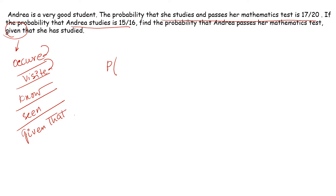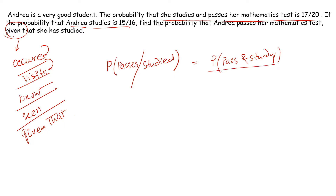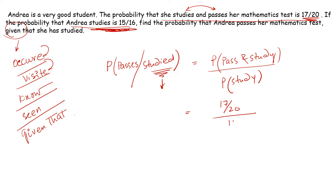We are asked to find the probability that Andrea passes her mathematics exam, given that she has studied. On the top write P(pass ∩ study) = 17/20, and in the denominator write P(study) = 15/16. The probability that she passes and studies is 17/20; the probability that Andrea studies is 15/16.